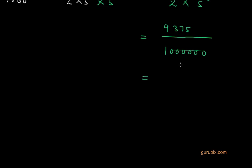Writing it as a decimal expansion, we make equal numbers of digits in numerator and denominator, so we put three zeros before 9375 to make seven digits in the numerator, matching the seven digits in the denominator. Since there are six zeros in the denominator, we count from right to left: one, two, three, four, five, six, and place the decimal point accordingly. So this gives us 0.009375, which is our answer.